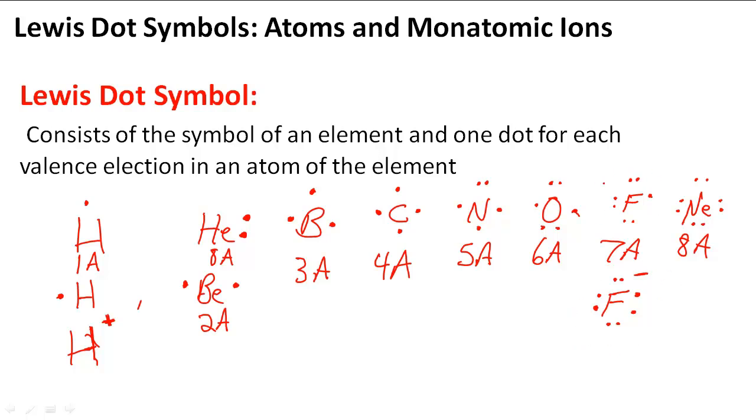So this is the Lewis dot symbol for an ion. This is a Lewis dot symbol for just an element. It shows you the difference that it's added one electron, so it's an anion.